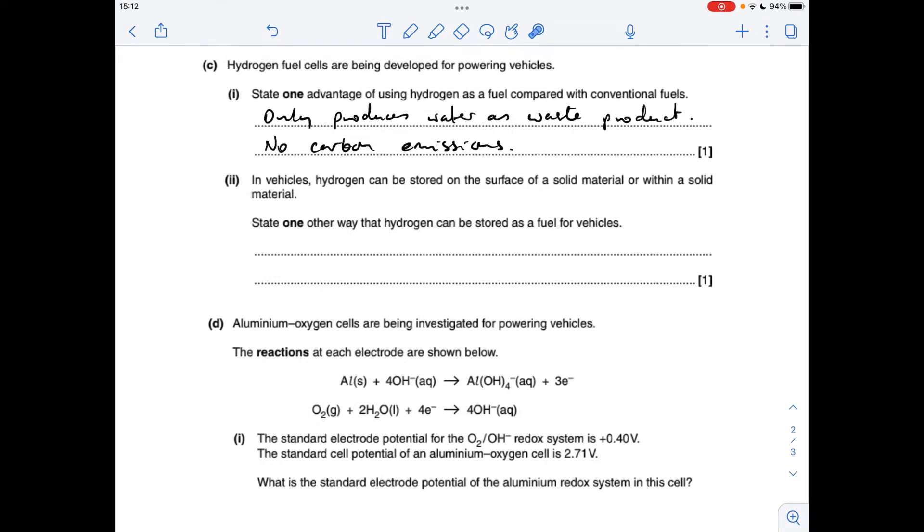Part C now, one advantage of using hydrogen as a fuel compared with conventional fuels. You could go for something like this: It only produces water as a waste product, or you could say there are no carbon emissions. And the next part, another way that hydrogen can be stored as a fuel for vehicles is as a liquid, but you'd have to include under high pressure.